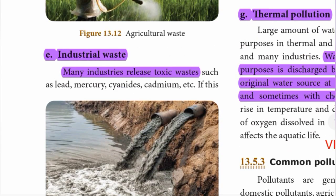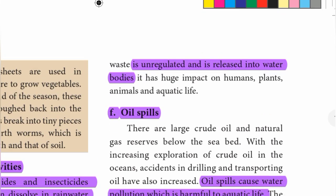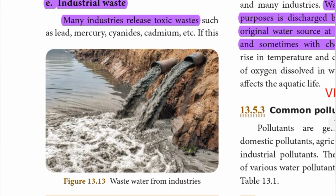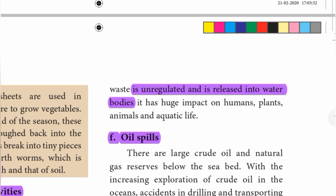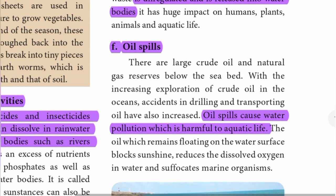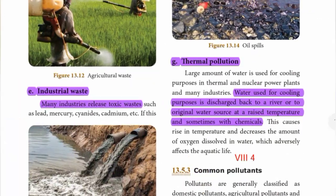Fifth, industrial waste — many industries release toxic waste that is unregulated and discharged into water bodies. Sixth, oil spills — oil spills cause water pollution which is harmful to aquatic life. Seventh, thermal pollution — water used for cooling purposes is discharged back to a river or original water source at a raised temperature and sometimes with chemicals.